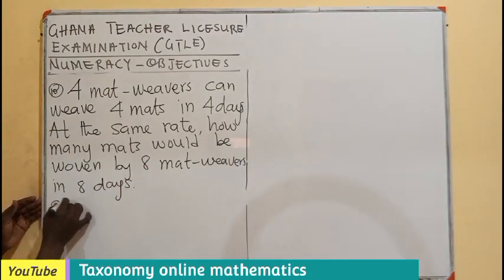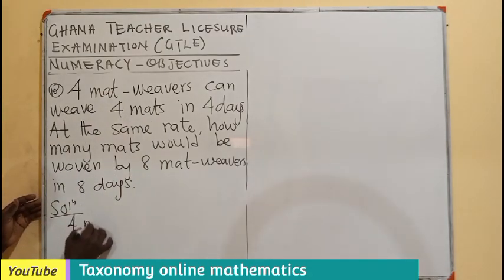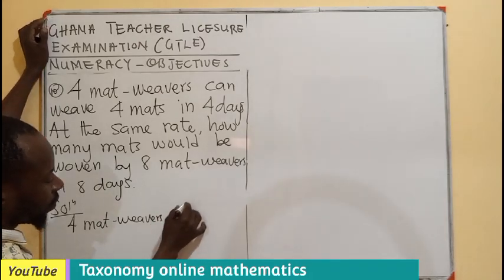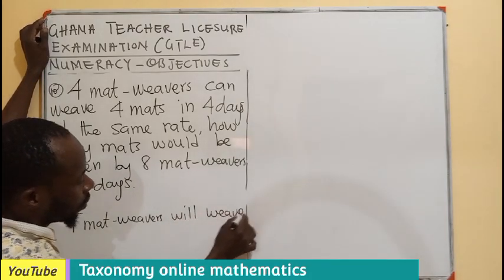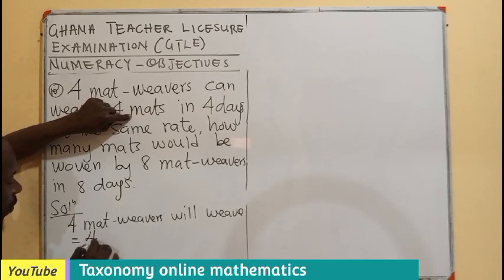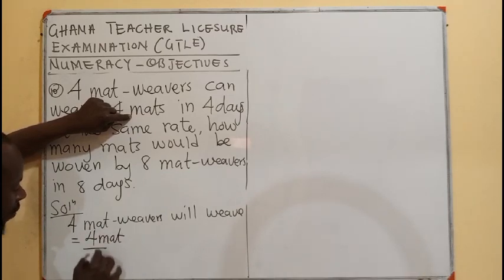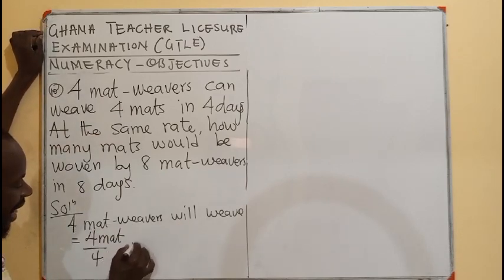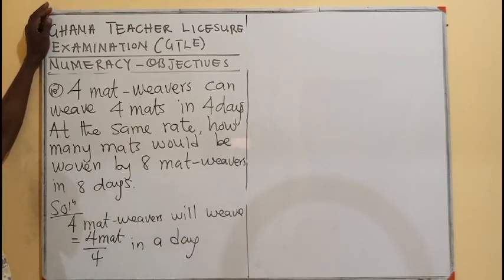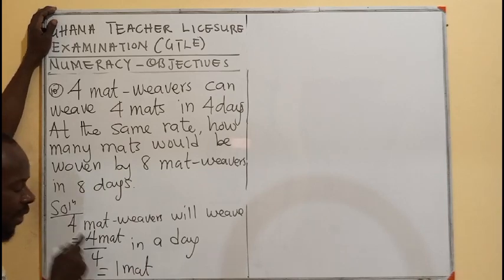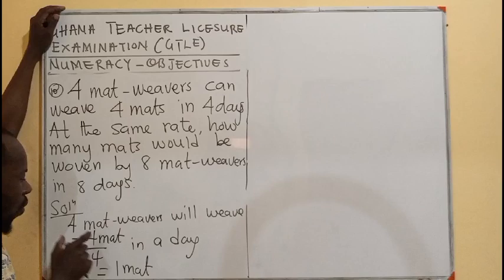So, right away, we can say that the four mat weavers, all of them will weave how many in a day? They are weaving four. So, that is going to be four mats over four. So, four mat weavers will weave this in one day. If you divide this by this, that gives you one mat. Four of them are weaving one in a day, just one, all of them.